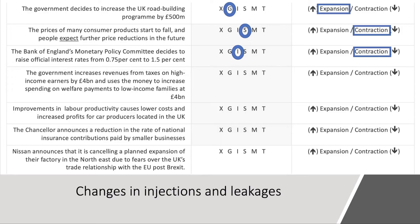Fourth: the government increases revenues from taxes on high income earners by four billion pounds and uses the money to increase spending on welfare payments to low income families by four billion pounds. I think on balance this is expansionary — you're taking money away from high income earners who typically save a high amount and using it to increase the incomes of people who typically have a higher propensity to spend.